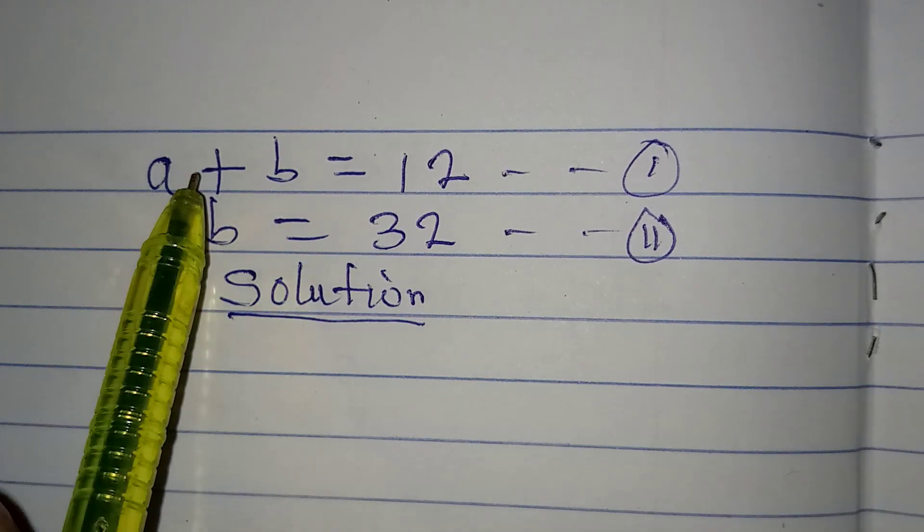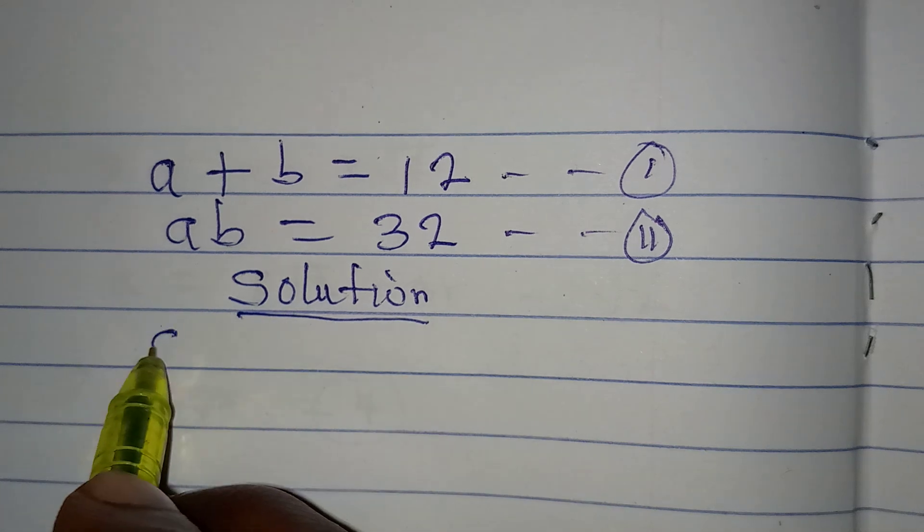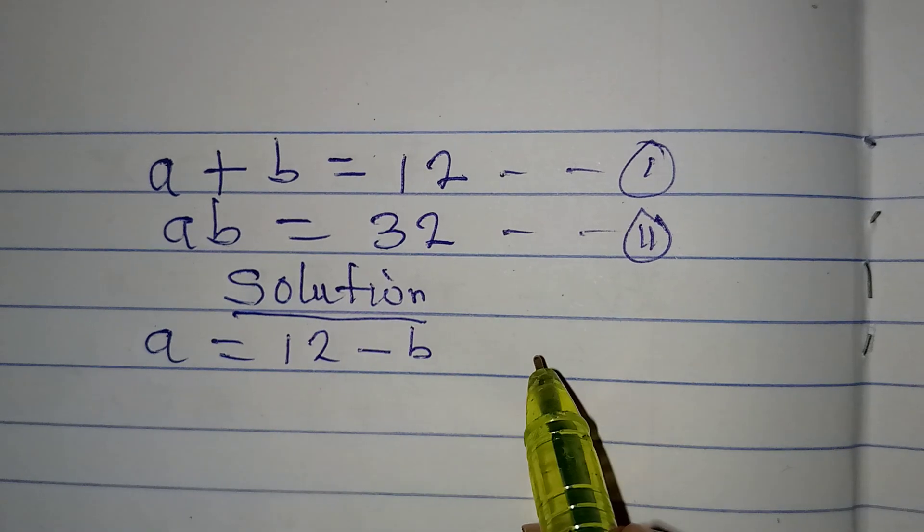What I will do is that from equation 1, I will make A the subject. So A will be equal to 12 minus B.